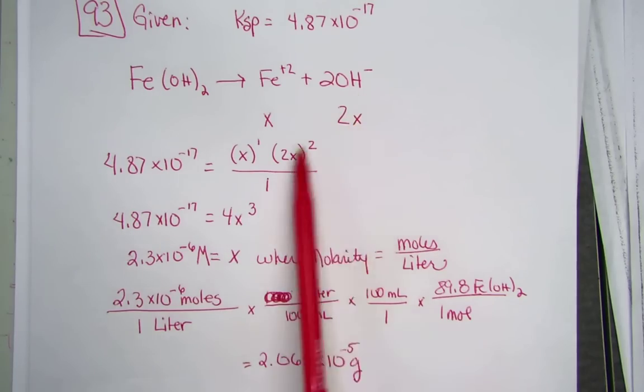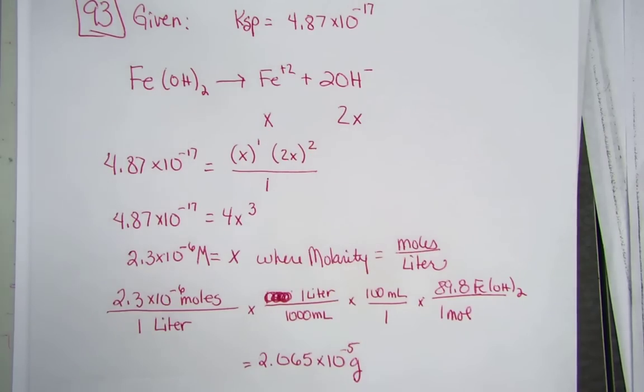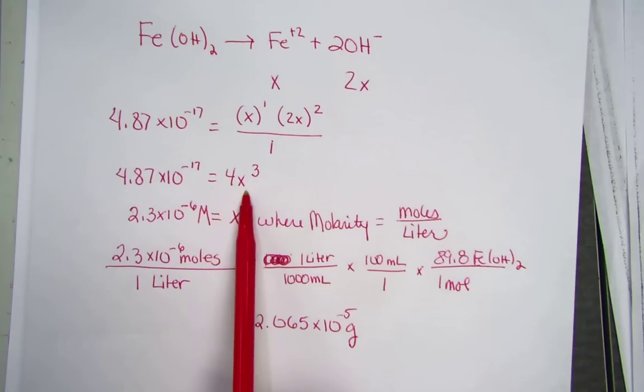The value of hydroxide ion is 2x, and the coefficient means that we would have to square it. Simplifying that, we see KSP is now set equal to 4x cubed.